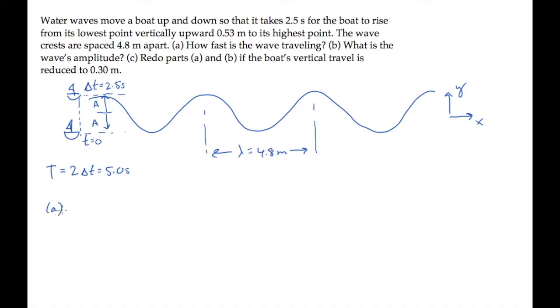So in part A, we can solve for the wave speed, lambda times f, by rewriting as lambda over the period, substituting values, and calculating to see that the wave travels at 0.96 meters per second.